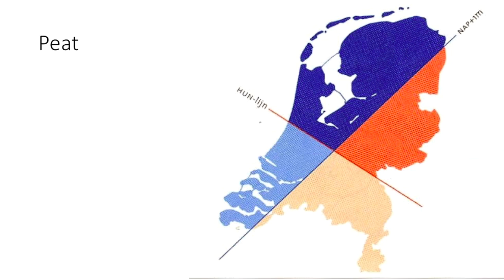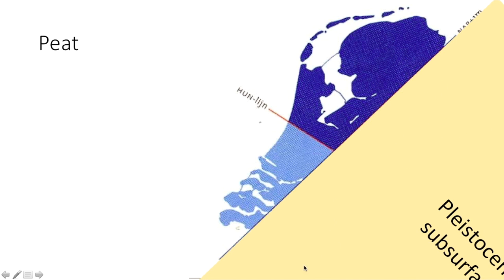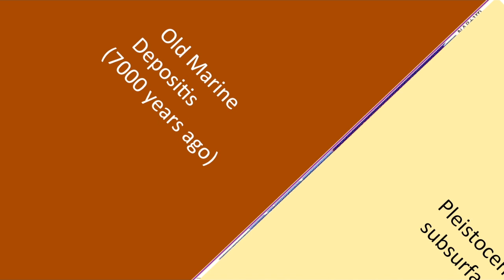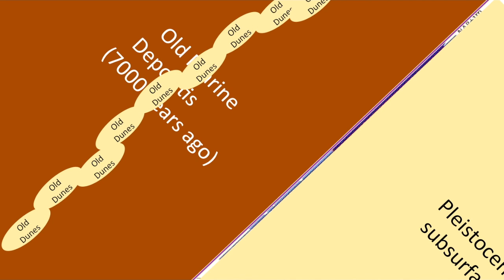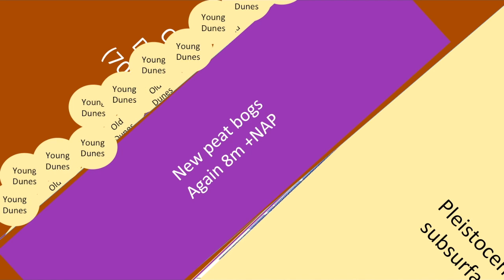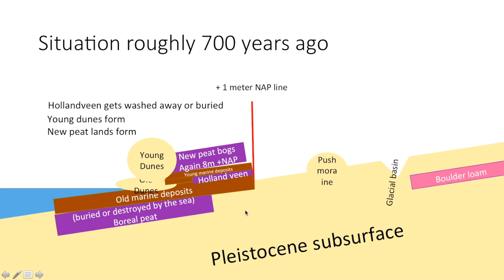Looking at the map of the Netherlands: the Pleistocene subsurface with glacial forms is here, without glacial forms there — sands and cover sands, some peat. Then the west gets buried in boreal peat, washed away and replaced by old marine deposits, then old dunes, then Holland Veen, then young marine deposits, then young dunes. If you start drilling in the west, you'd expect to find: new peat, young marine deposits, Holland Veen, old marine deposits, boreal peat, and finally the Pleistocene subsurface.